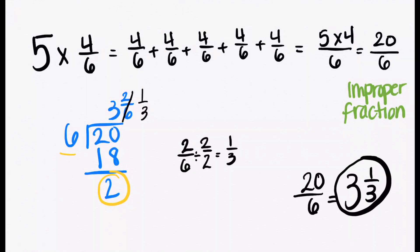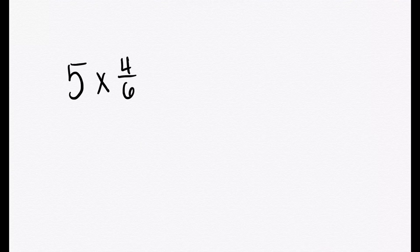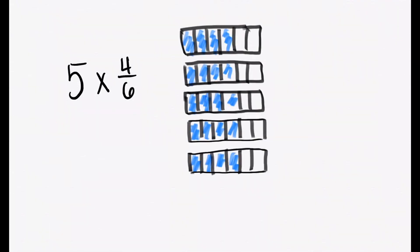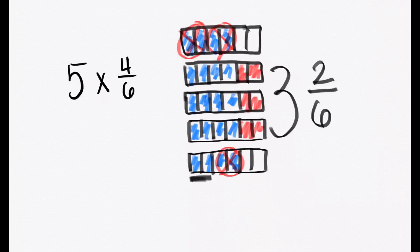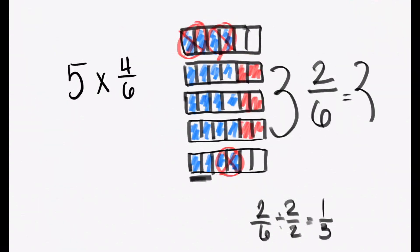Now I want to show you this in a picture format. So 5 times 4 sixths means 4 sixths 5 times. We need to make wholes. So we'll take those two and fill up that one and cross those off. We'll take those two and fill up the next one and cross that off. We can take the bottom two and fill up that one and get rid of those. So now we have 3 wholes, and on the bottom we have 2 sixths. But we know we can simplify 2 sixths by dividing the top and the bottom by 2 and getting 1 third. So our answer was correct: 3 and 1 third.